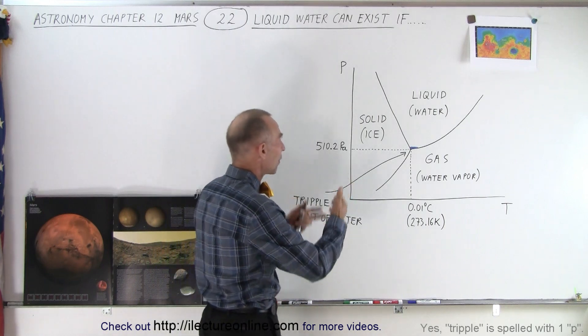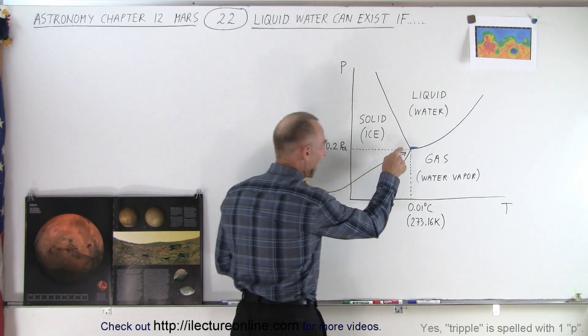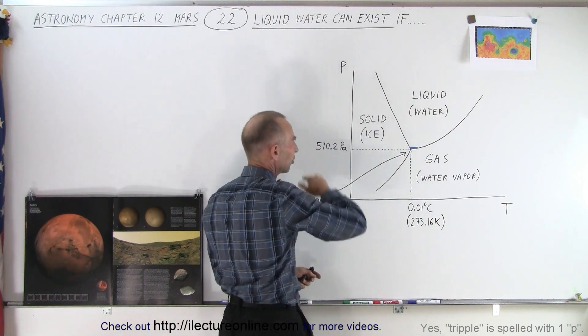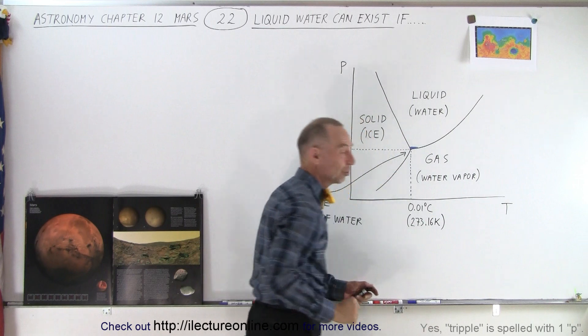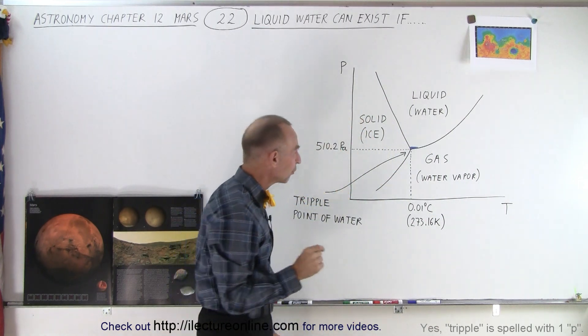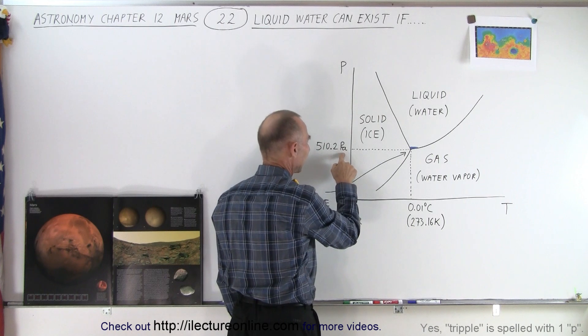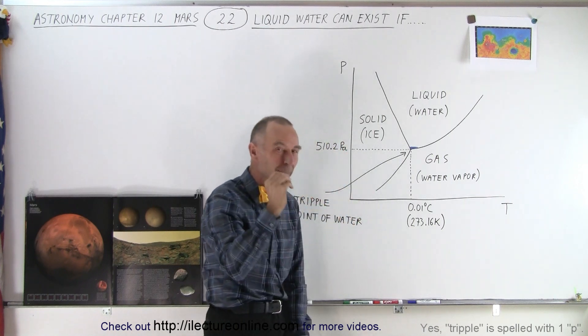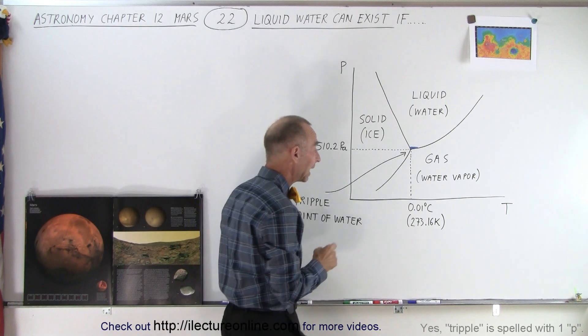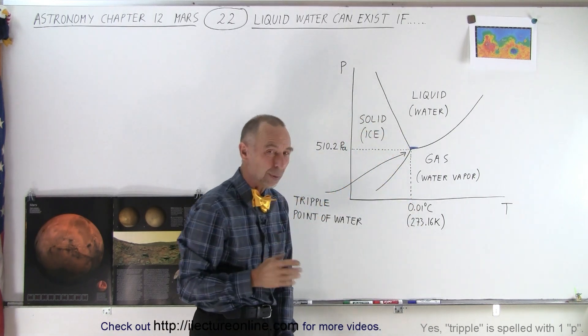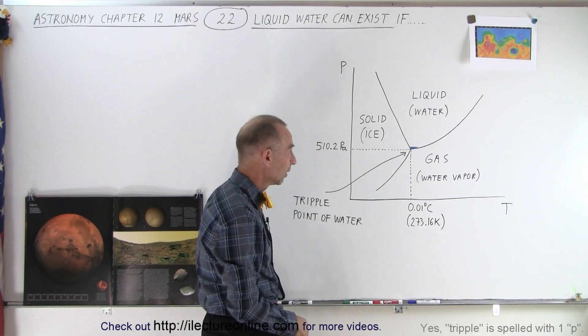Here we have a diagram that explains that we have the triple point of water at this particular location. On the vertical axis we have pressure, on the horizontal axis we have temperature. And you can see that the triple point of water occurs at a pressure of 510.2 pascals, which is a little bit below the atmospheric pressure on Mars, and at a temperature of 0.01 degrees Celsius, 273.16 Kelvin.